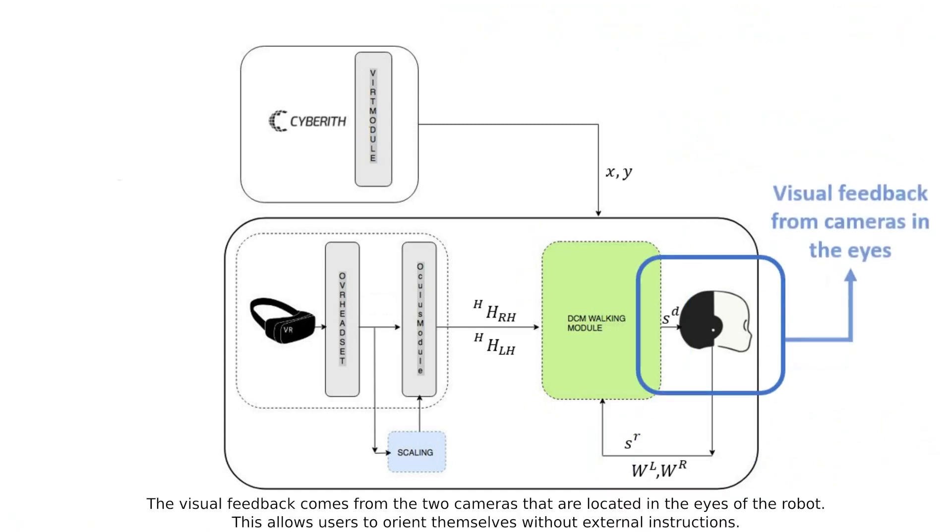Visual feedback comes from the two cameras that are located in the eyes of the robot. This allows users to orient themselves without external instructions.